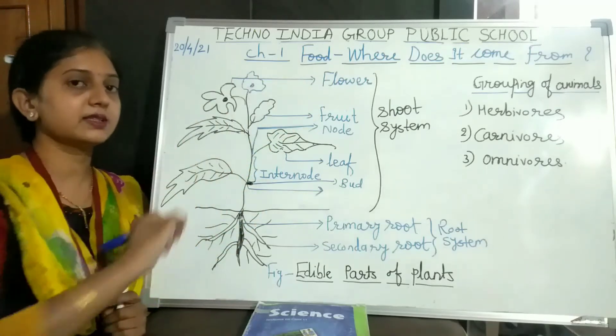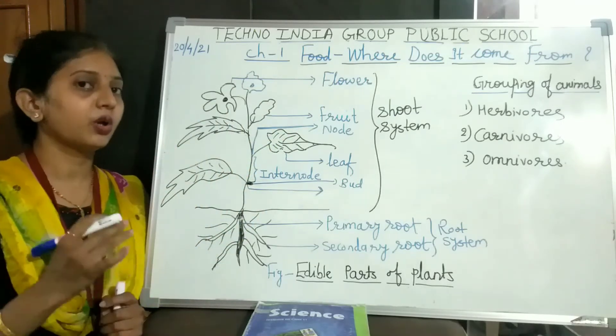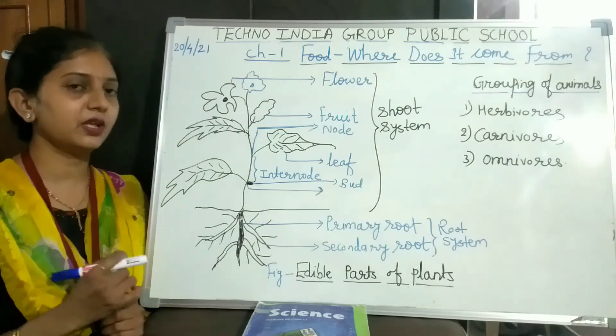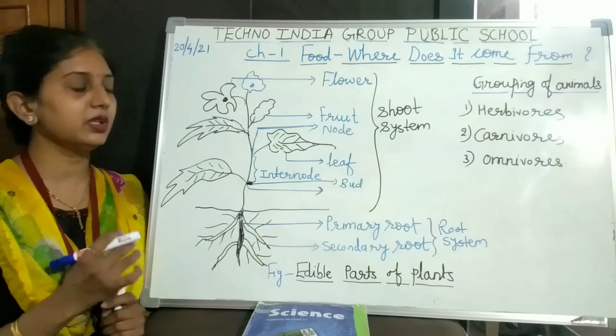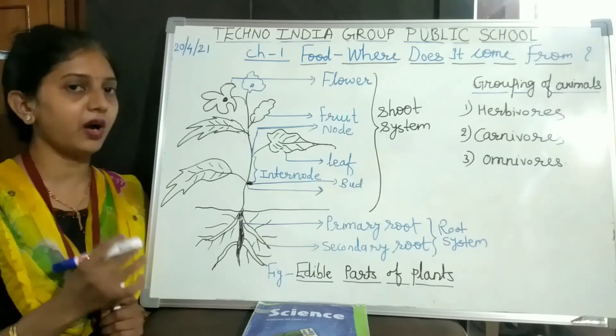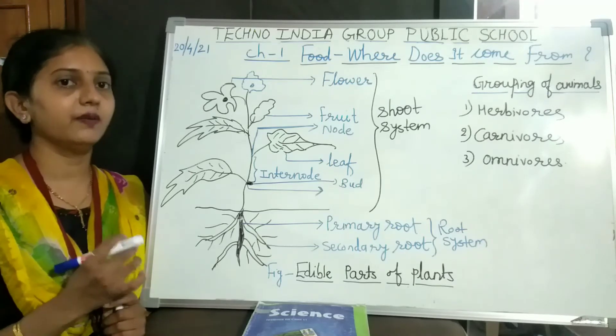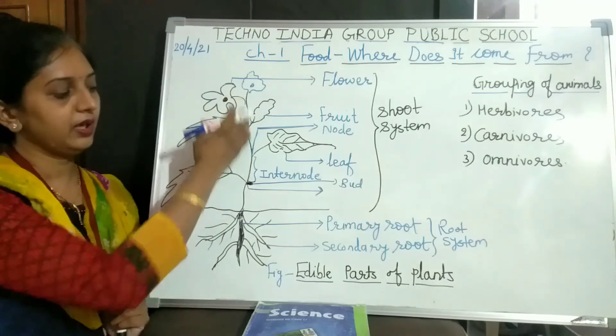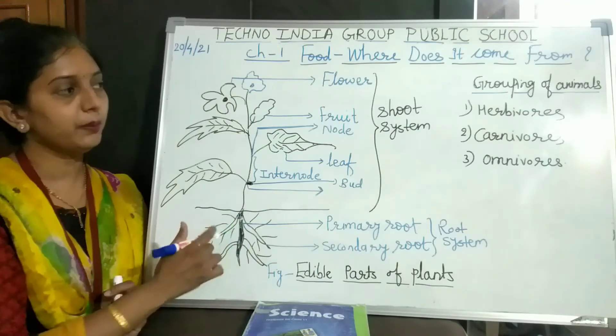What is an example of the flower as an edible part? Cauliflower, which we use as a vegetable, is eaten in the form of its flower. These are the edible parts of the plants.